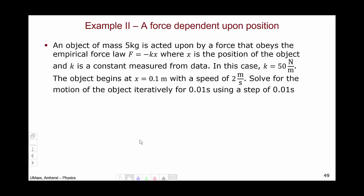k is equal to 50 newtons per meter. The object begins at 0.1 meters with a speed of 2 meters per second. We want to solve for the motion of the object iteratively for 0.01 seconds using a step of 0.01 seconds.